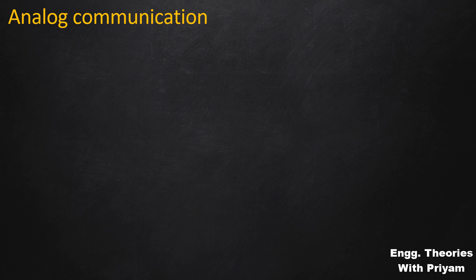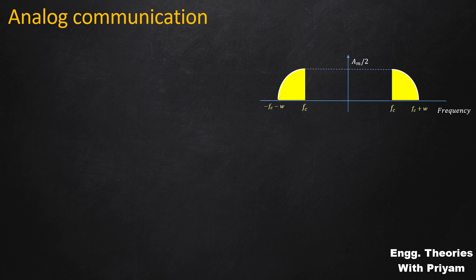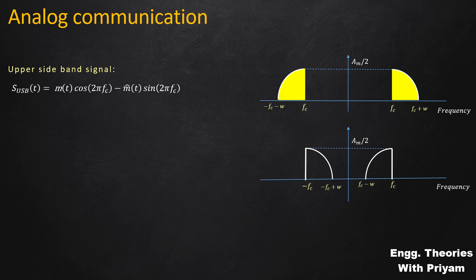In the last lecture, we saw the generation of the SSBSC modulated signal by using the Hilbert transform, where we determined the equation for the upper sideband SSBSC modulated signal and the lower sideband SSBSC modulated signal. The equation for the upper sideband was m(t)·cos(2π·fc·t) minus m̂(t)·sin(2π·fc·t), and for the lower sideband was m(t)·cos(2π·fc·t) plus m̂(t)·sin(2π·fc·t).